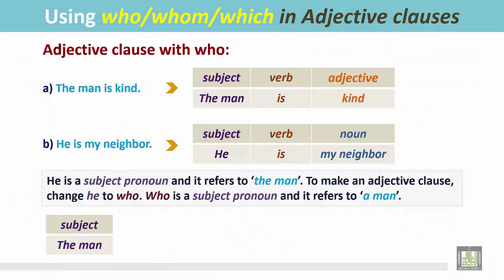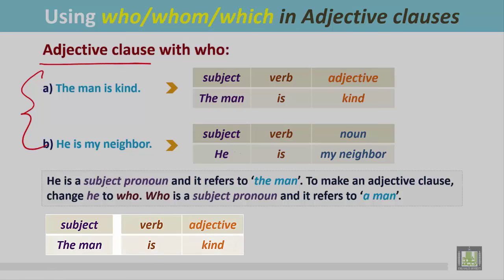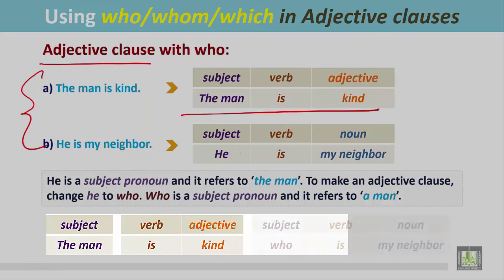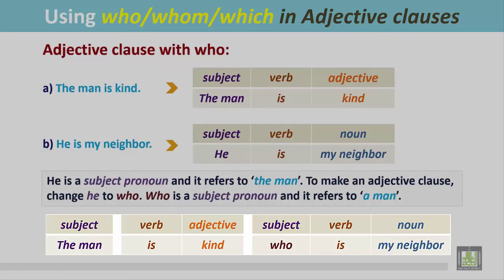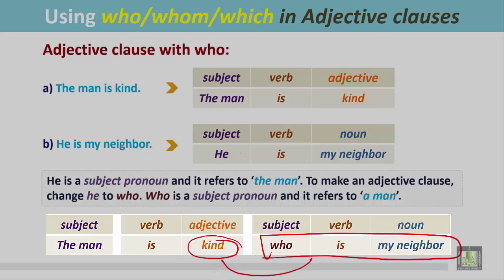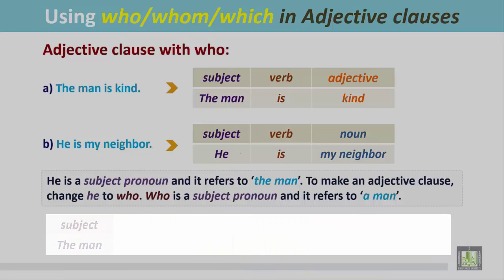See this structure carefully — how we join these two sentences to make an adjective clause. The man is kind — this is the first sentence. Who is my neighbor — this is the second sentence after changing 'he' to 'who.' However, according to the condition of an adjective clause, it must immediately follow the noun. 'Who is my neighbor' cannot modify 'kind' — an adjective clause modifies a noun. So joining them that way is wrong.